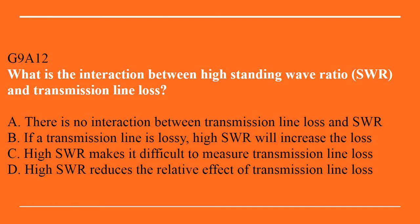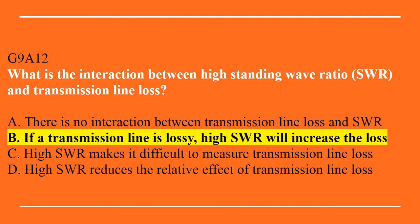G9A12: What is the interaction between high standing wave ratio and transmission line loss? A. There is no interaction between transmission line loss and SWR. B. If a transmission line is lossy, high SWR will increase the loss. C. High SWR makes it difficult to measure transmission line loss. Or D. High SWR reduces the relative effect of transmission line loss. The correct answer is B — if a transmission line is lossy, high SWR will increase the loss.